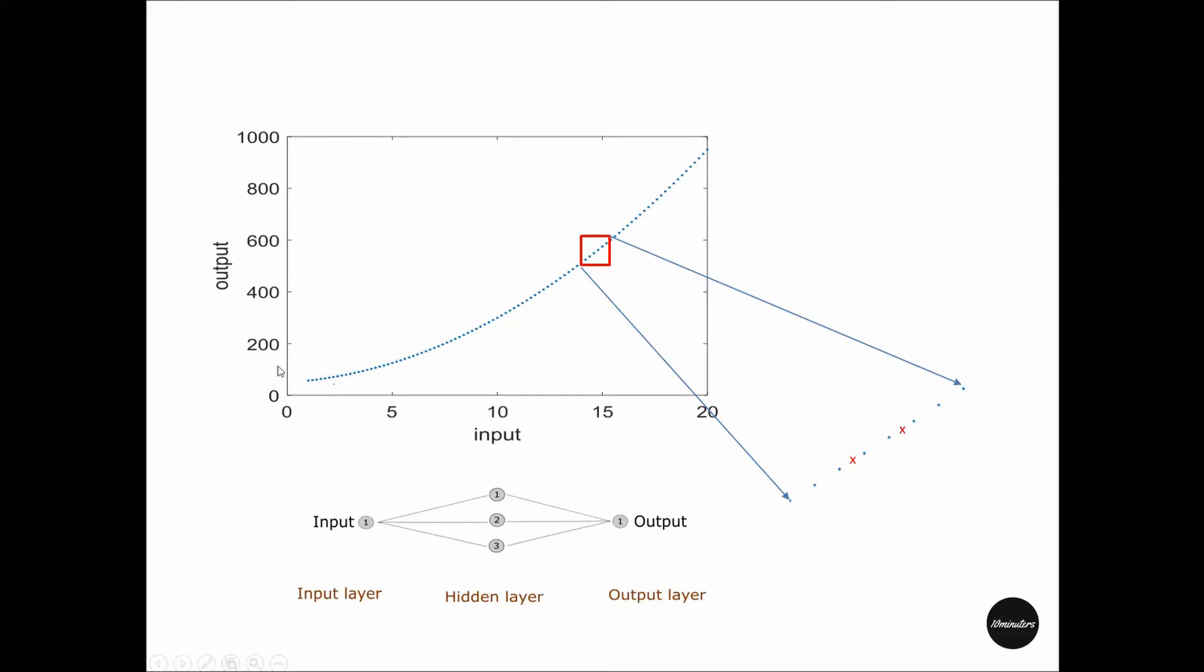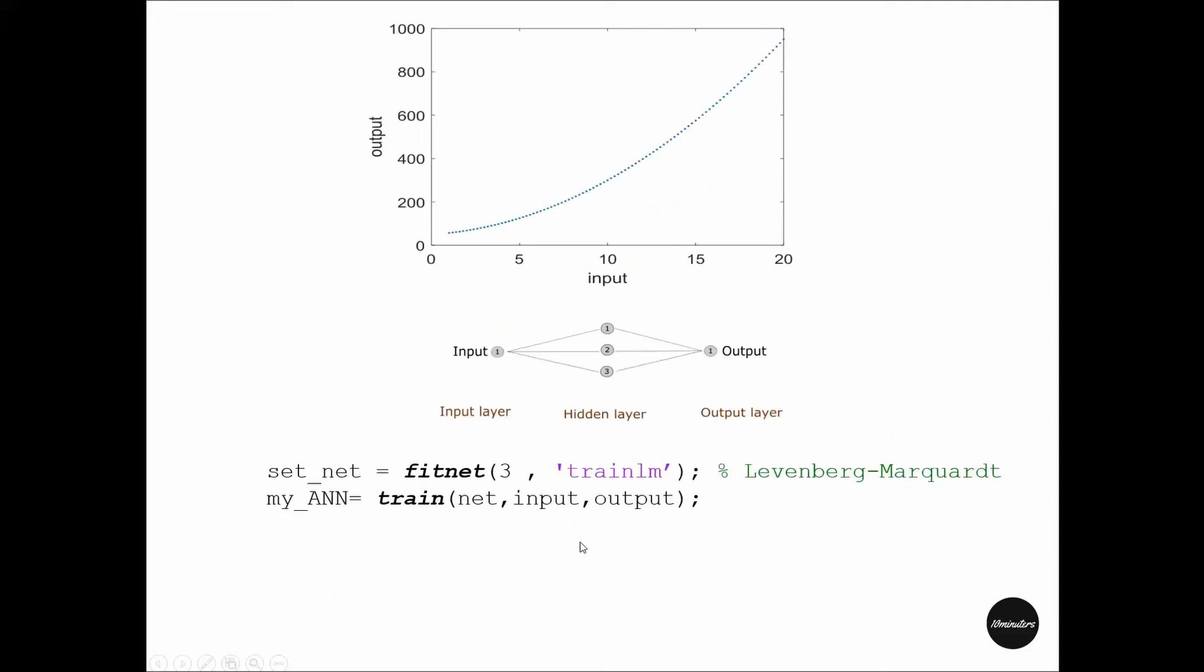He also knows the values for the output layer—the y coordinates of each point. He can choose around a three-node hidden layer and train an artificial neural network. Let's see how he's going to do that.